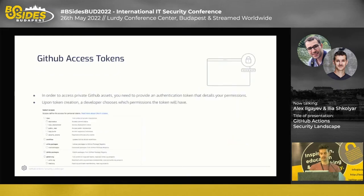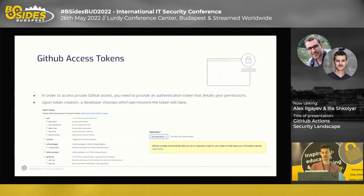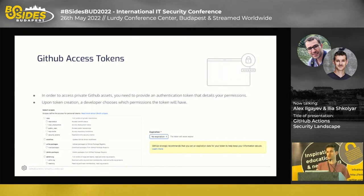A few words about access tokens in general. To access and modify GitHub assets, you need an authentication token that details your permissions. When creating a token, a developer can choose which permissions it will have — a subset of the user's permissions. A user can have access to many organizations and repositories. These tokens can also be created with or without expiration, making them potentially very powerful and long-lived.